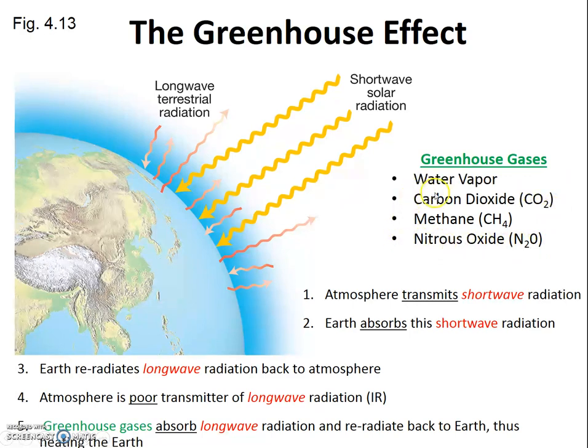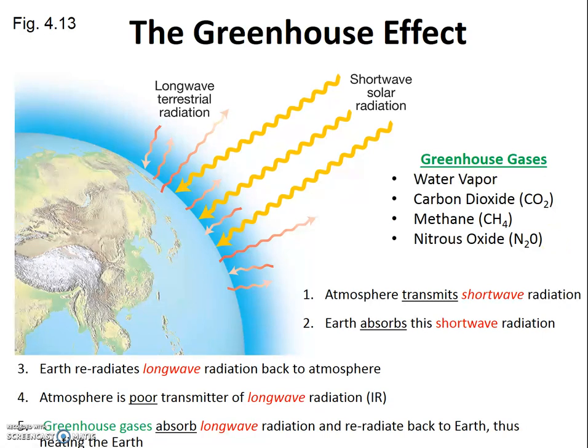Carbon dioxide, methane, and nitrous oxide are probably the three most important greenhouse gases that humans have dramatically increased in the troposphere.